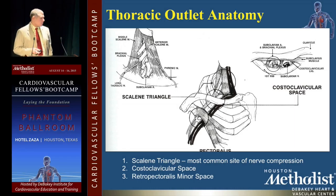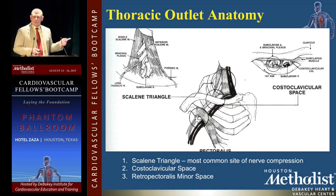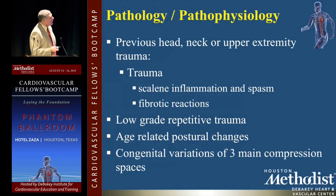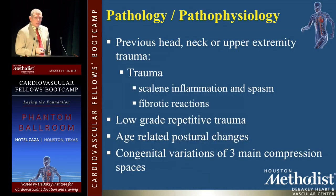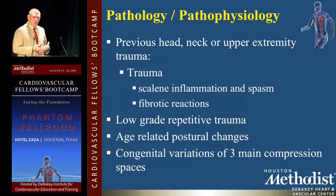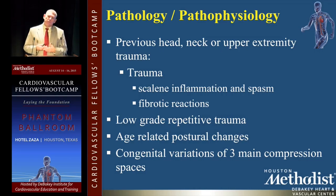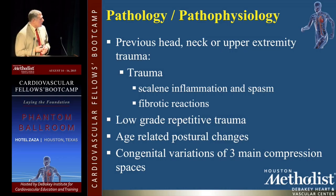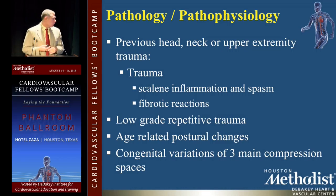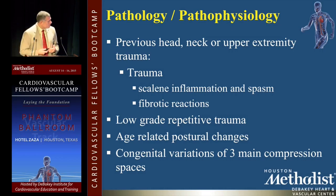The scalene triangle, the costoclavicular space, and the retropectoralis minor space — I do believe the retropec minor space is a pretty significant contributor to either unfounded success or failure of the procedure. Some of the pathology and pathophysiology to reiterate: previous trauma, inflammation, spasm, fibrotic reactions, low-grade repetitive trauma that doesn't make any sense lifestyle-wise, but in the end the cumulative repetitiveness causes the problem. You also have age-related postural changes and congenital variations of the three compression spaces.